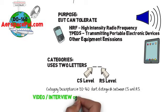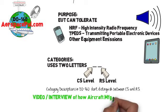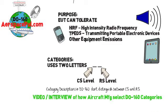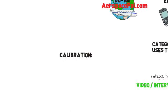I promised to follow up with a video on how aircraft manufacturers select categories depending on the system and their location. For conducted susceptibility there is a calibration required.